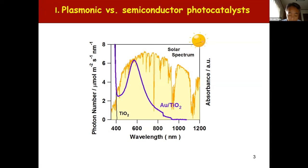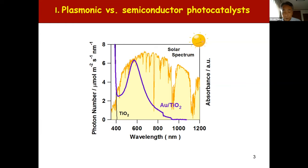This is the solar spectrum with photon number taken at the ordinate. As you can see, the sunlight is widely distributed with a peak around 680 nanometers. To increase the solar to chemical conversion efficiency, it is necessary to utilize the visible to near-infrared light.